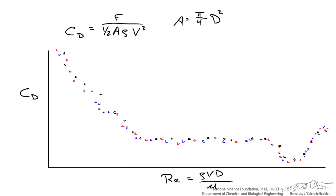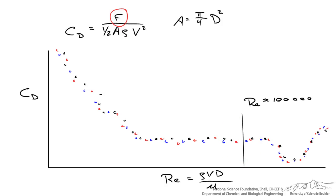What that allows you to do is extrapolate. Say you have tested 1 cm, 10 cm, and 100 cm diameter spheres, but now you have a 50 cm diameter sphere in some strange fluid with a different viscosity and you haven't done the experiment yet. You know the diameter, the velocity of interest, and the density and viscosity of the fluid. You want to know the drag force. If the Reynolds number falls in a particular region — say around 100,000 — you draw a line and read off the corresponding coefficient of drag, which might be 0.6. From that coefficient of drag, you can calculate the force of drag without ever running the experiment.